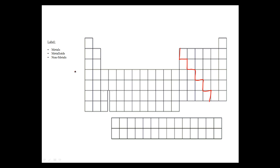Now that we've organized the periodic table into three major categories — the metals, the metalloids, and the nonmetals — we can go a little bit deeper into the trends of the periodic table.